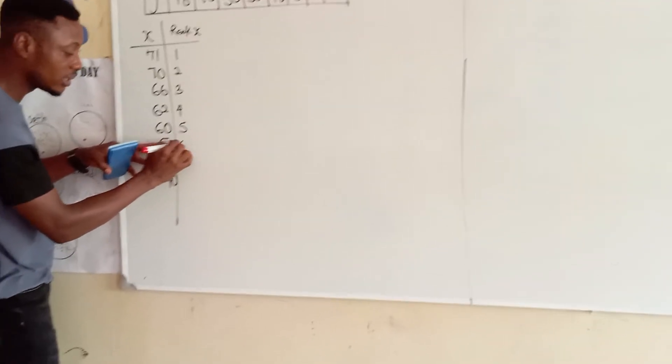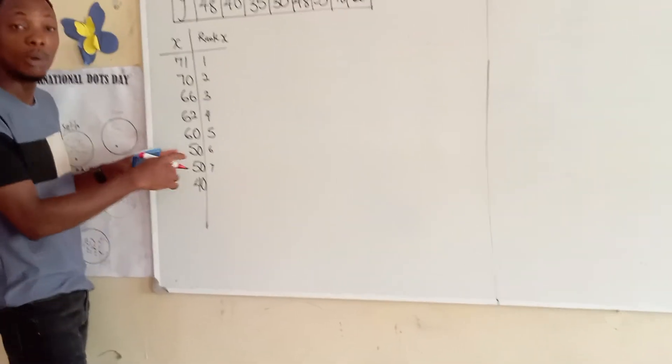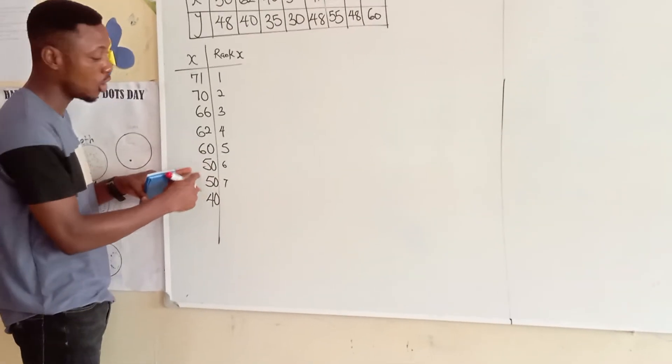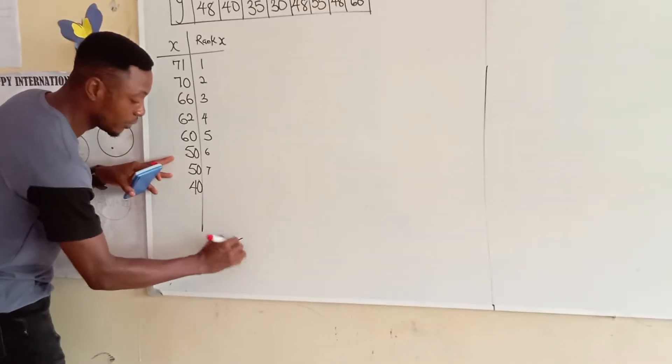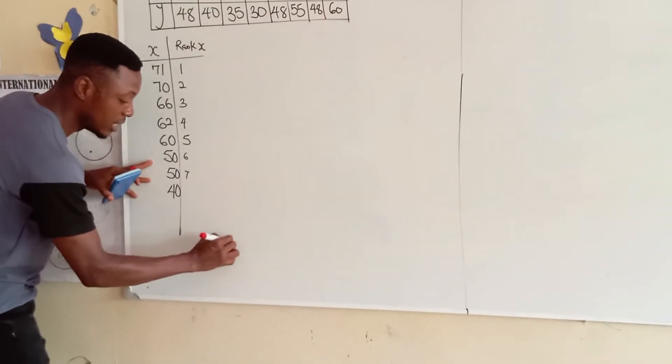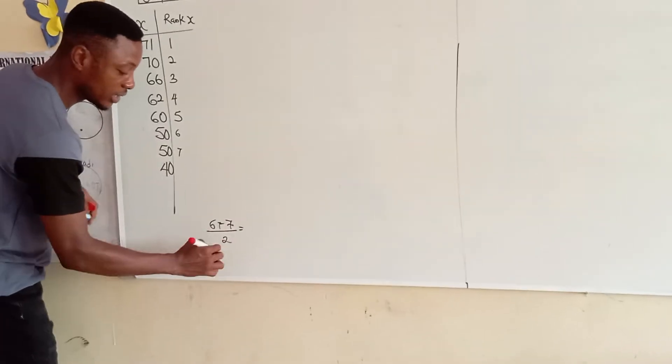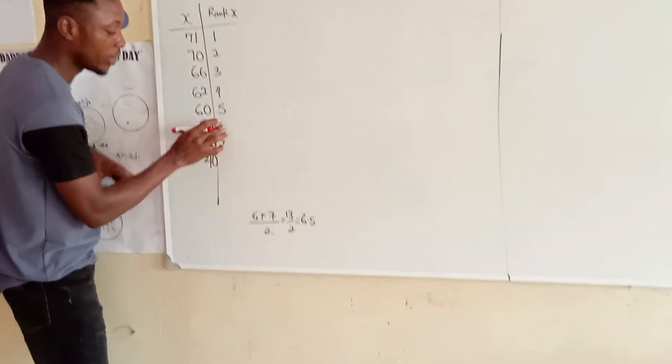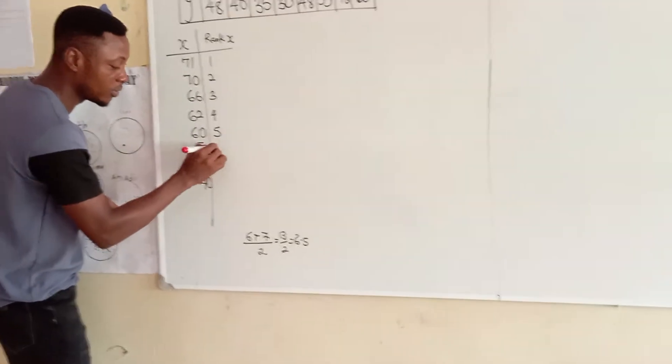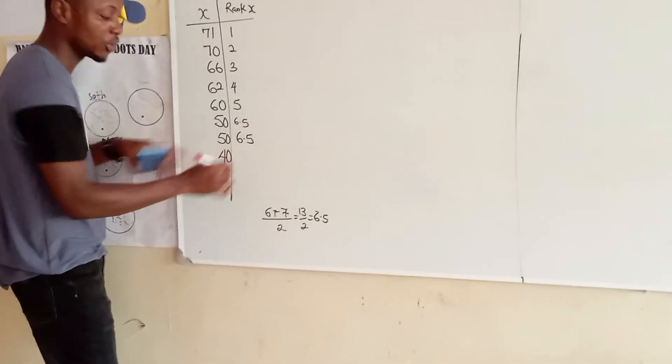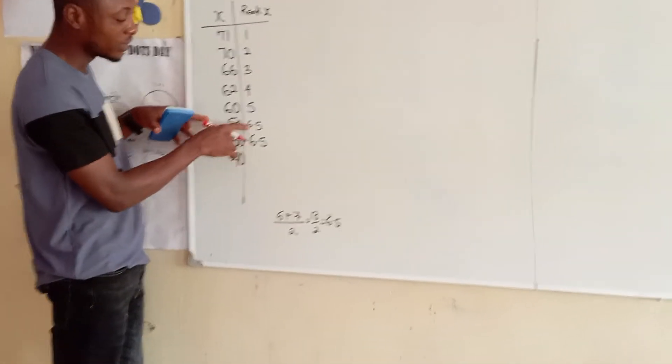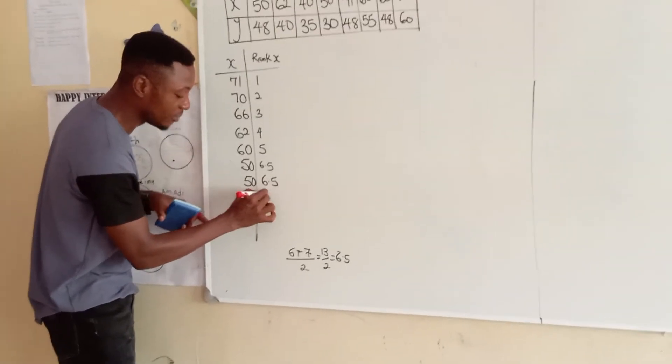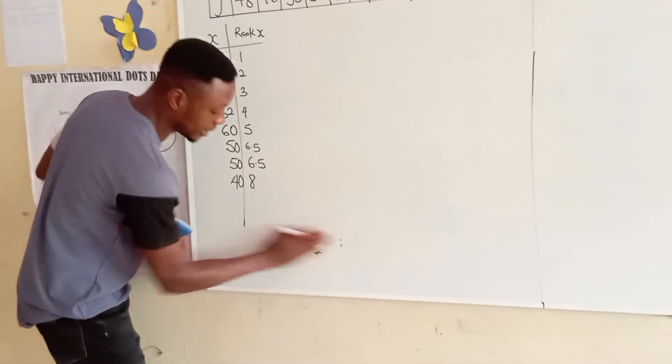50, 50 is sixth and seventh. But we are not going to put it sixth and seventh, because the two of them have the same score. Now, what do we do? Just do the rank. We find the average of the rank. Six plus seven divided by two. Six plus seven will give us 13. Divide by two will give me 6.5. So, instead of six and seven, I'll put 6.5, 6.5, because we look for the average of six and seven, because they have the same scores. Now, this will then give me eight, because after six and seven, we've got eight.